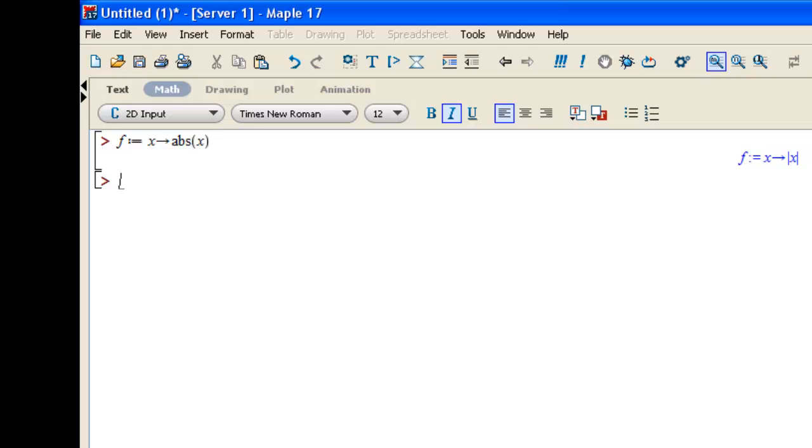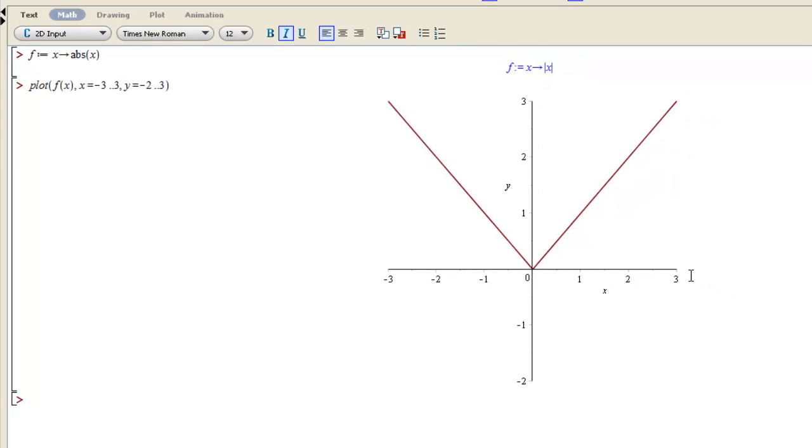So what does this look like? Well, let's see. We can plot f of x and say we want our x's to range from negative 3 to 3 and our y's to range from negative 2 to 3. So there's what the absolute value function looks like.